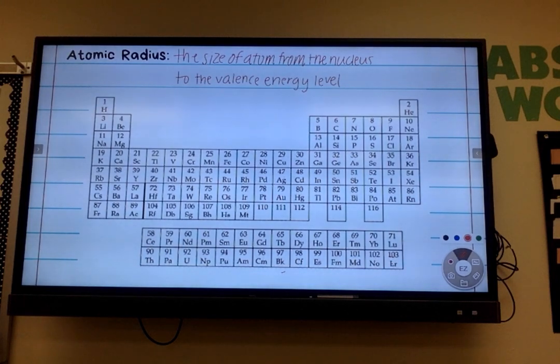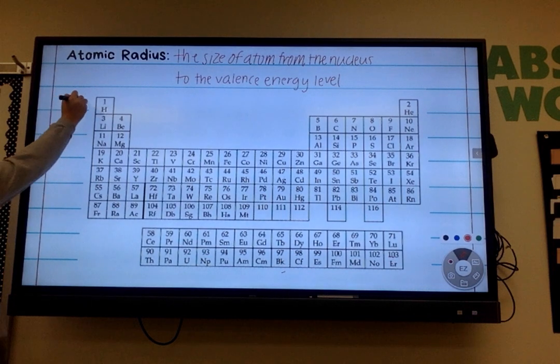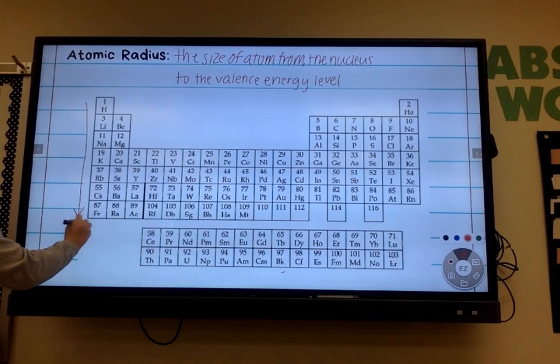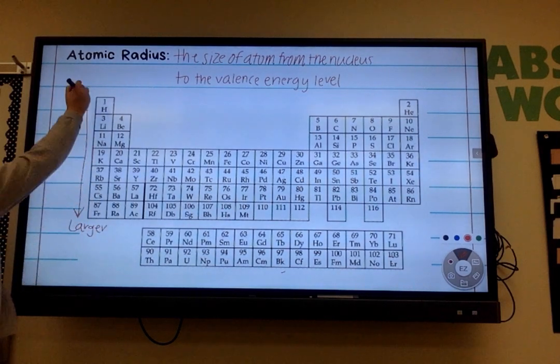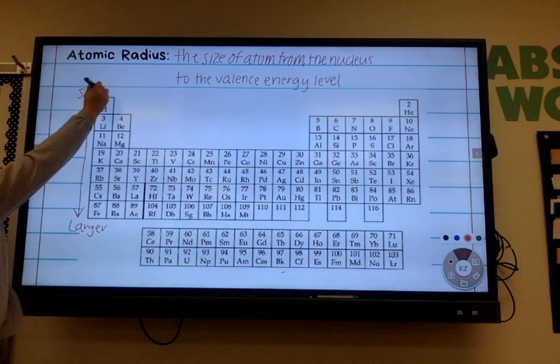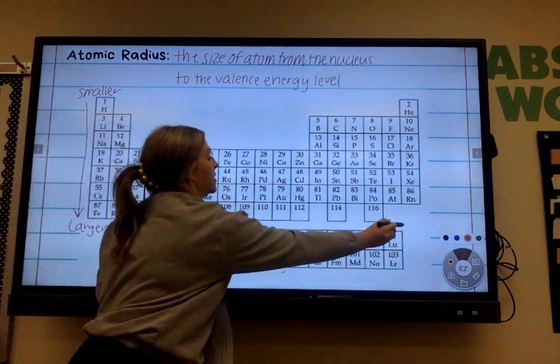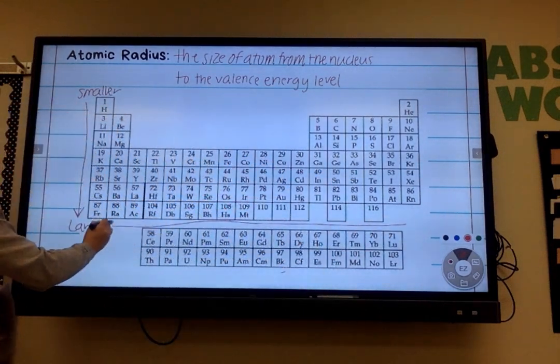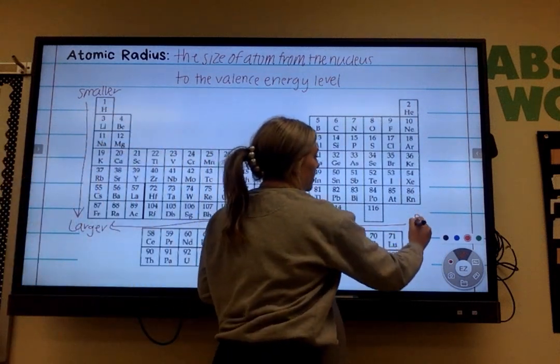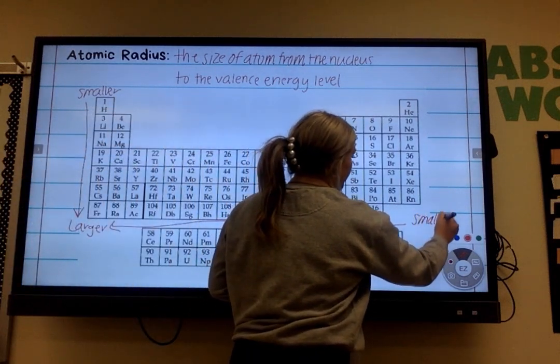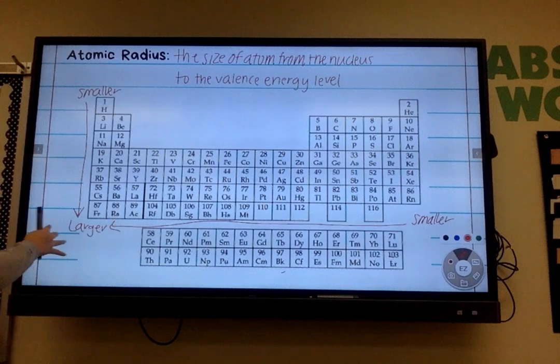What I would have you do is know that as we go towards the bottom left, the atomic radius is getting larger. So if I'm going from top to bottom, it is getting larger. At the very top they are considered smaller. If I am going from right to left, it is smaller to larger. So smaller atomic radius over here, larger over here.